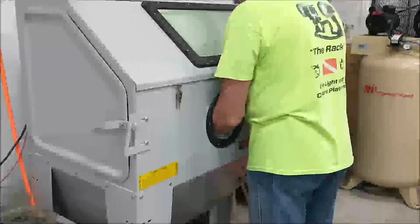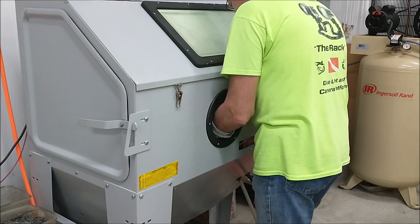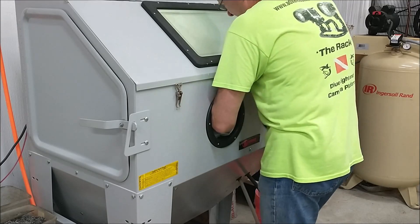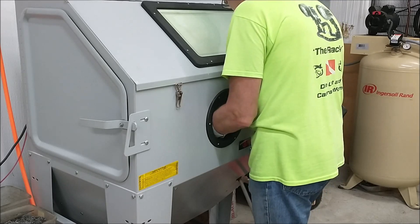I want these parts to look cast and not machined, so I'm going to stick them in the blaster. This is a glass bead, number six glass at about 80 pounds, and this will put a nice satin sheen on them, make them look cast, and remove a lot of the machining lines.